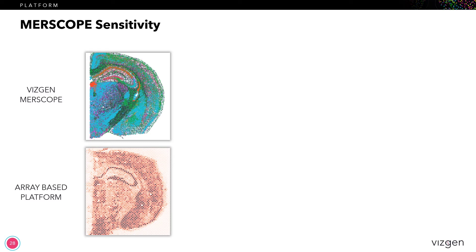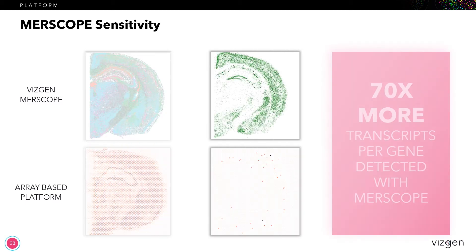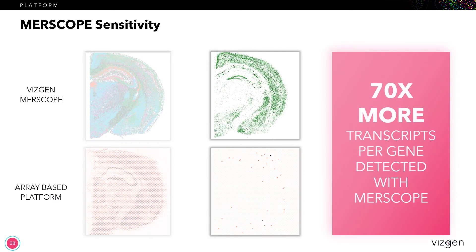If we look at a single gene — in this case it's an opioid receptor gene — on the MERScope side, you can clearly see all of the cells that are expressing this particular gene, and you can start to see the organizational structure of those cells within the section.